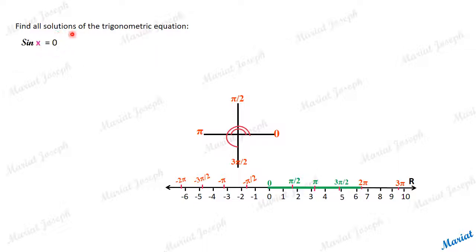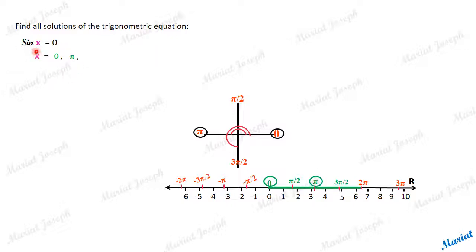Solutions means all possible values of the variable which make the equation true. What values of x make sin x = 0? Of course, x = 0 is a solution — sin 0 radian is 0. Also, x = pi radian is a solution — sin pi is also 0.